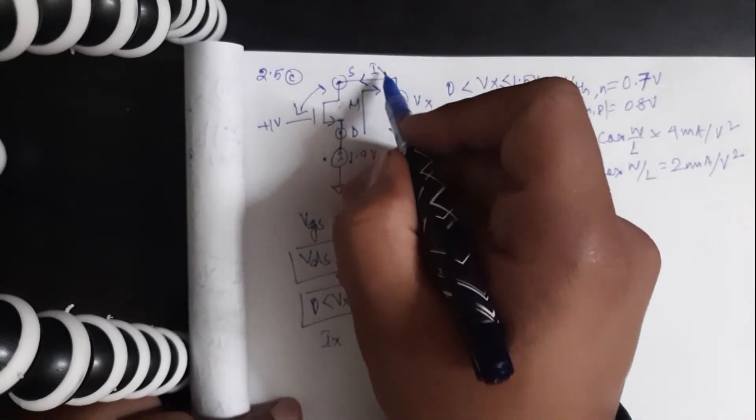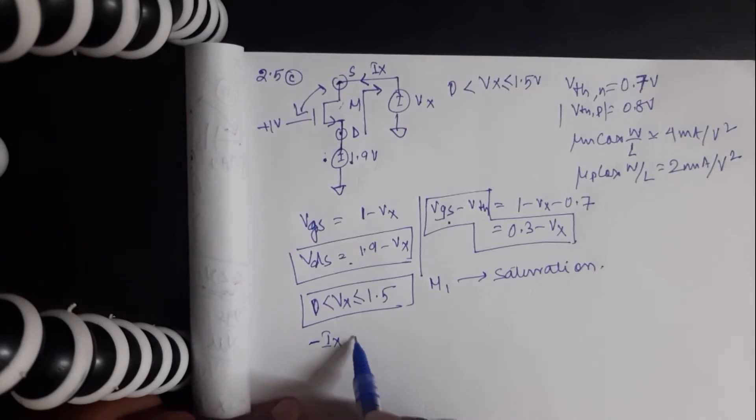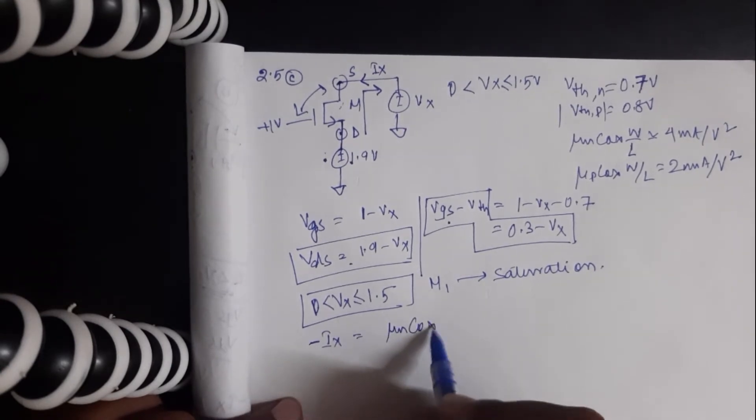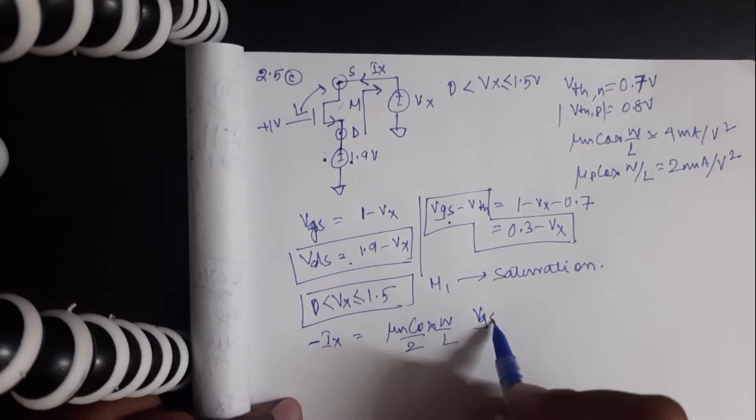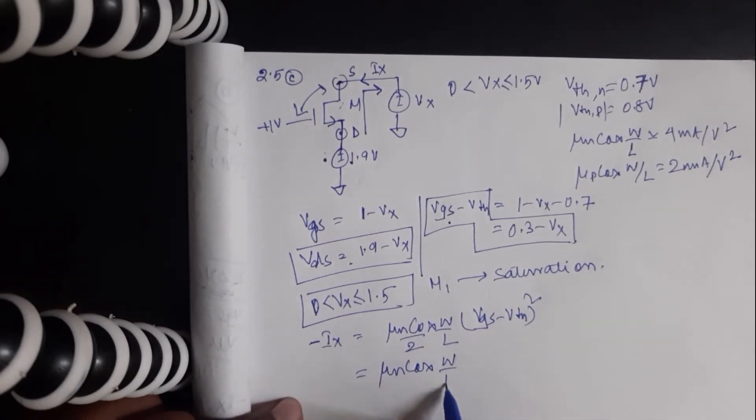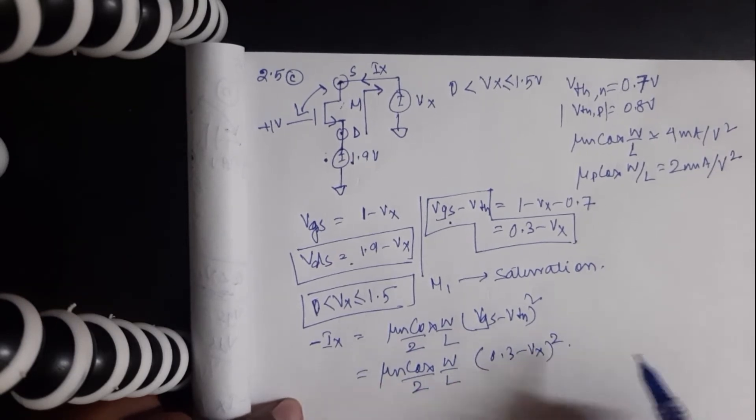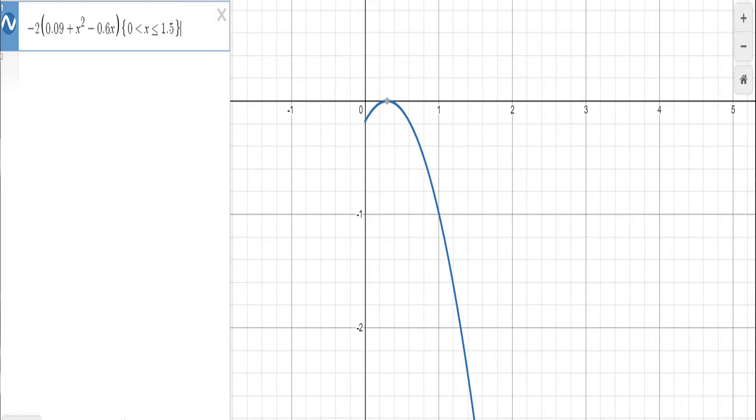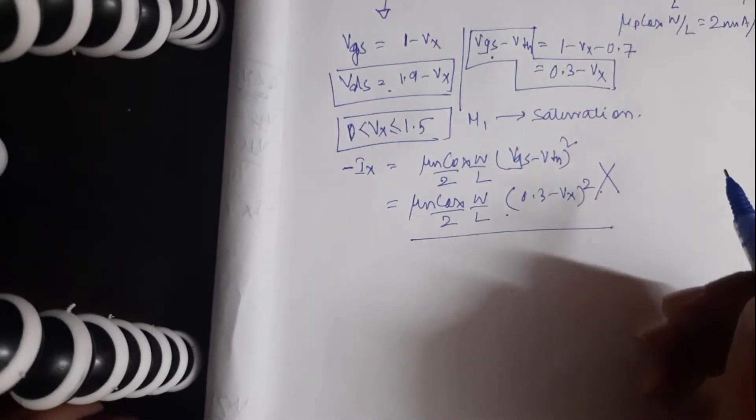And also the current direction is this, so I'll use minus IX here. This should equal mu_n * Cox * W/L * half of that * (VGS minus VTH) squared, which is nothing but mu_n * Cox * W/L * (0.3 minus VX) squared. And we can use simple graphing calculators to plot this current equation, but this is completely wrong. Why?